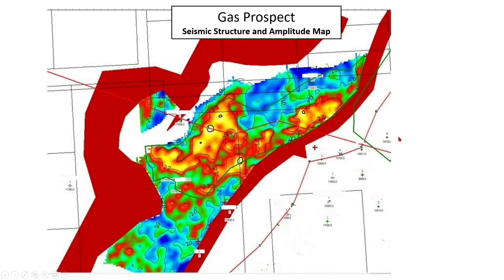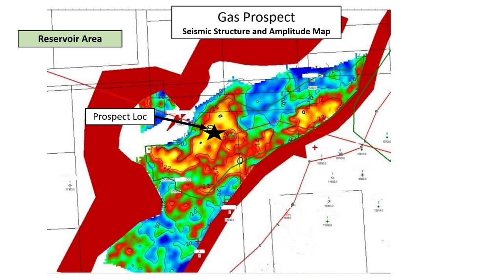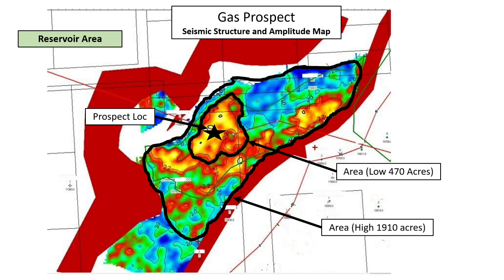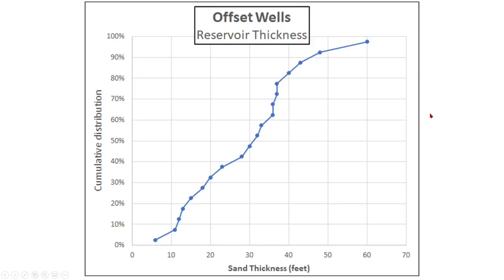Let's look at this seismic structure map with amplitude. The bright amplitude shown in yellow and red is a hydrocarbon indicator, and we're going to use this map to estimate the reservoir area for our prospect — marked here with a black star right in the bright amplitude where we think there's a gas indicator. If we draw a polygon around the bright contiguous amplitude area around the well, that could be the drainage area — about 470 acres as the low estimate. Drawing a bigger polygon bracketing how large it could be gives us about 1,910 acres as the high area. So we have a range of areas.